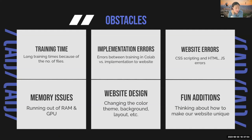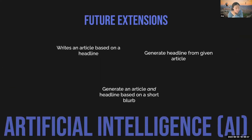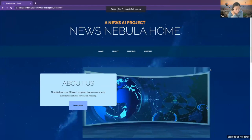Now Eva will cover obstacles and future steps. Some obstacles we faced included long training time due to the number of files we trained the model on. We also had implementation errors between training the model in Google Colab versus implementing it to the website, website errors such as CSS, HTML, and JavaScript issues, and memory issues running out of RAM and GPU. We also had to change the website design from the initial template, adjusting the color theme, background, and layout. For future extensions, the model could write an article based on a headline, generate a headline from a given article, or generate both from a short blurb.